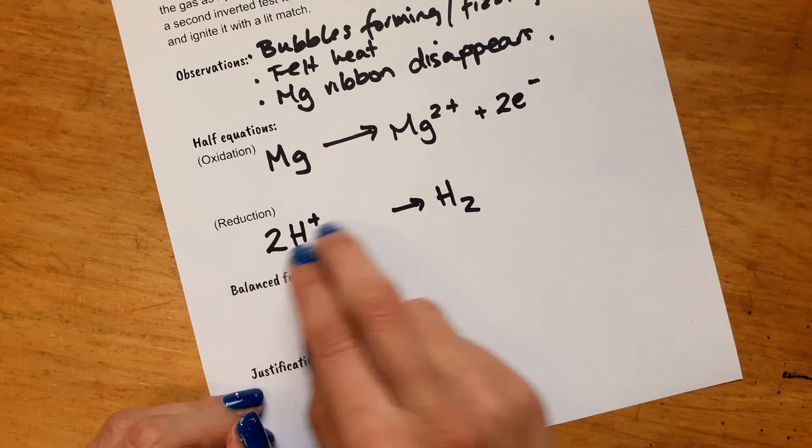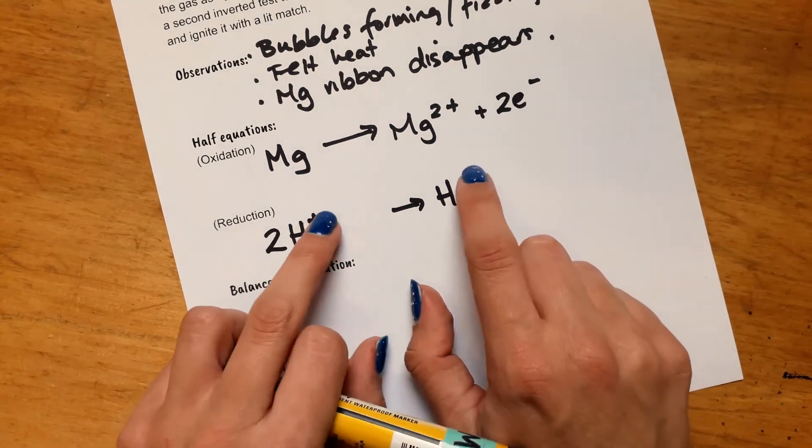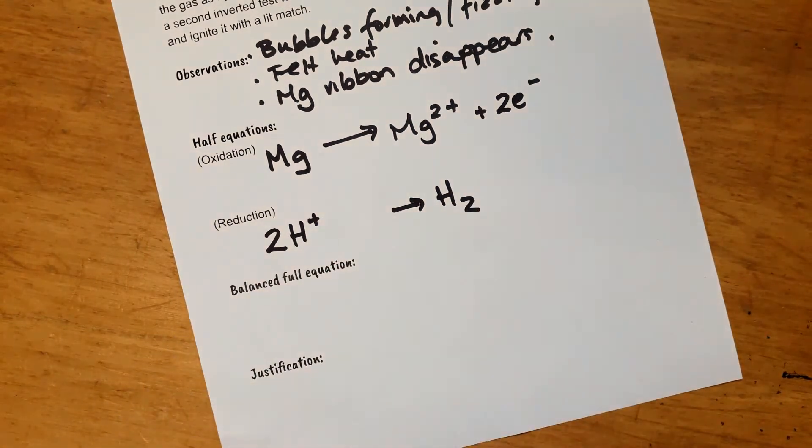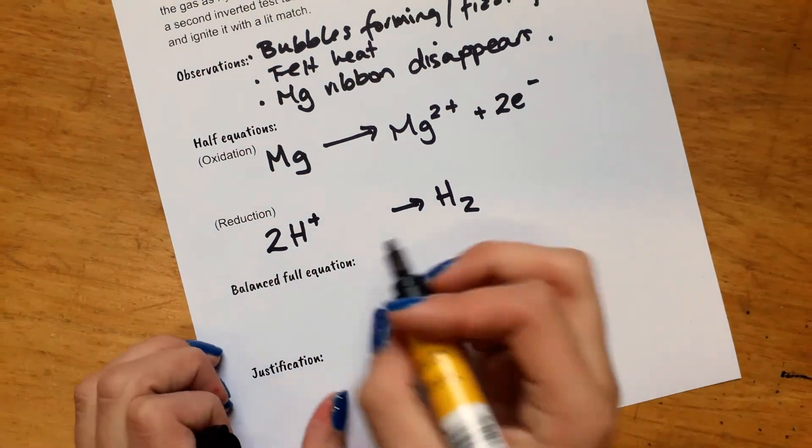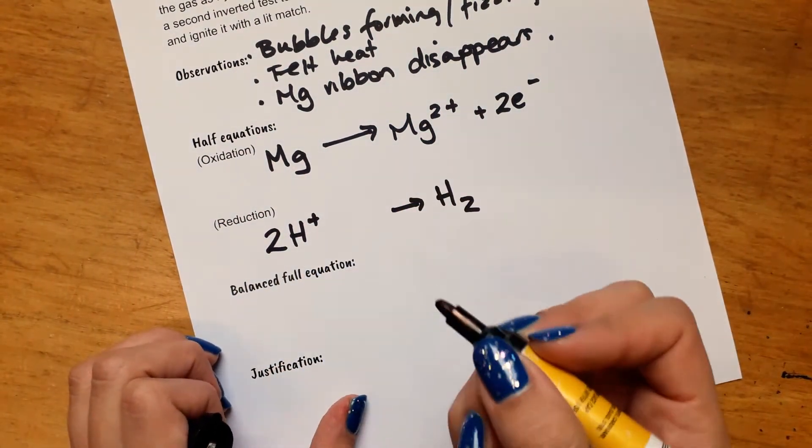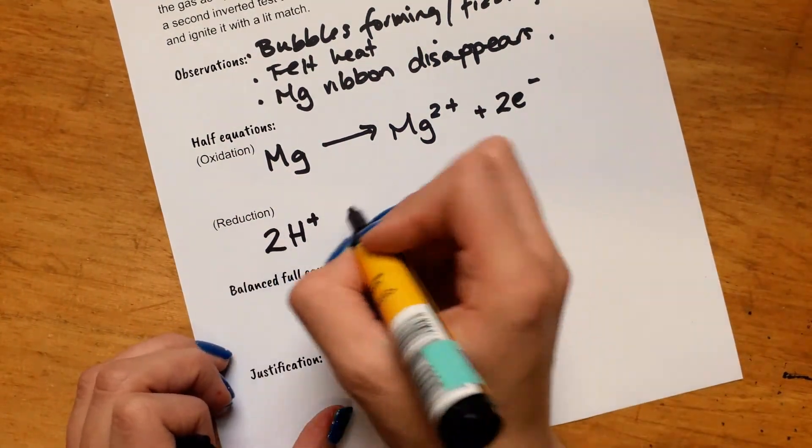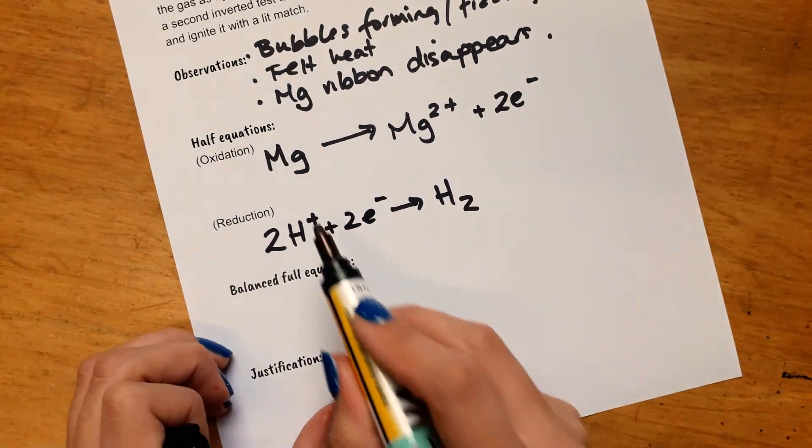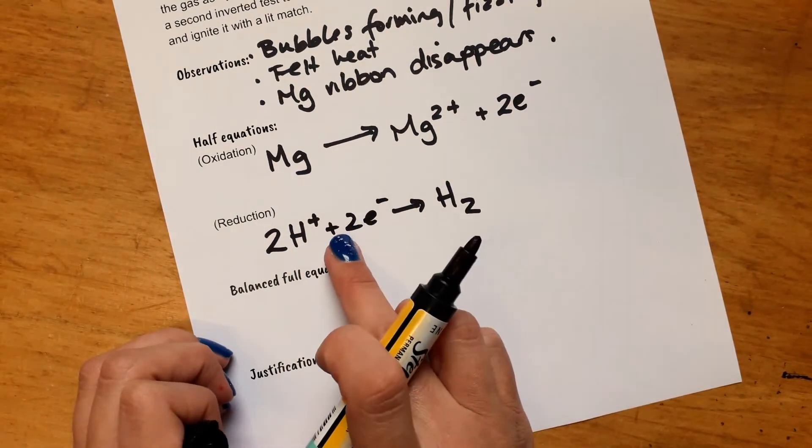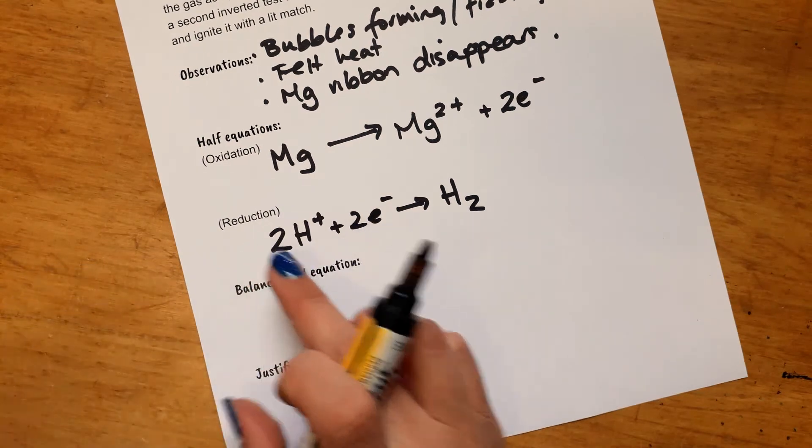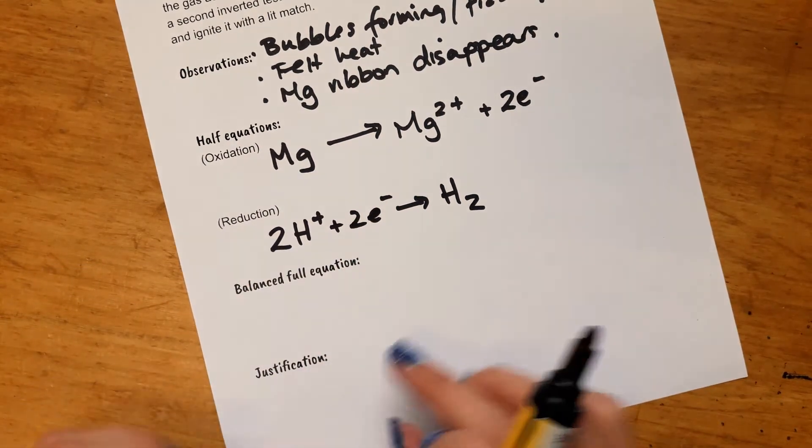So we have two hydrogens on this side, two on that side. We also have to make sure the charges are balanced. So these hydrogens, each one has gained one electron. So for two hydrogens, we also have to have two electrons gained here. So this is on the left hand side. This is a reduction or a gain in electrons.